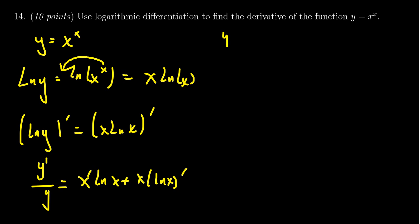So we see that y prime over y is going to equal, well, the derivative of x is just 1, so we get 1 times the natural log of x. And then the derivative of the natural log of x is going to be 1 over x.